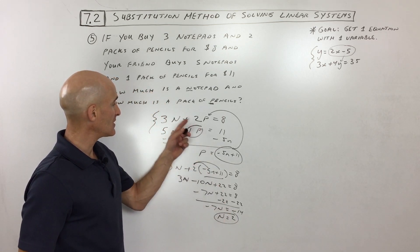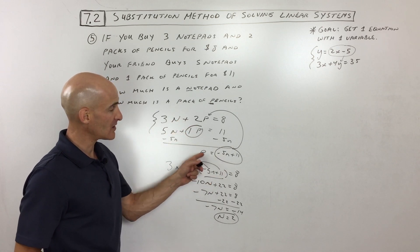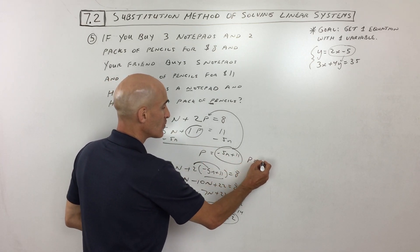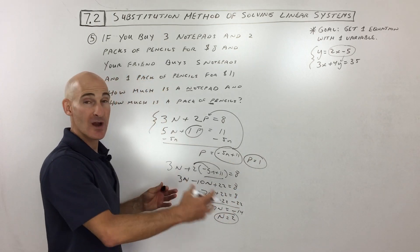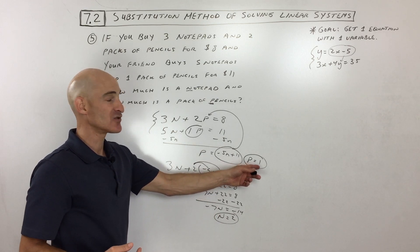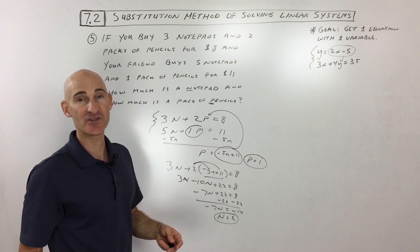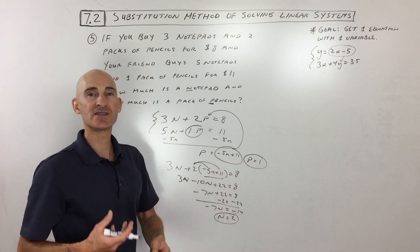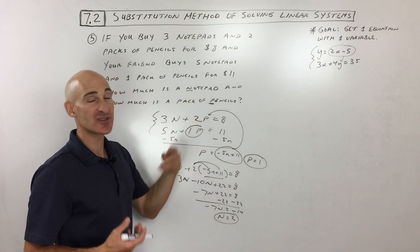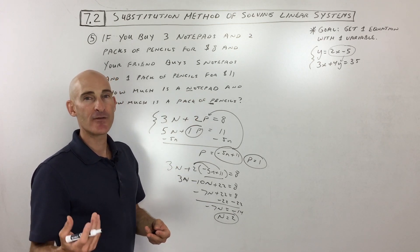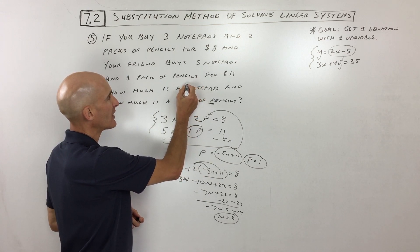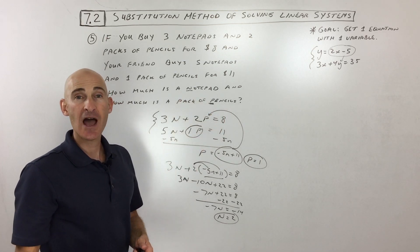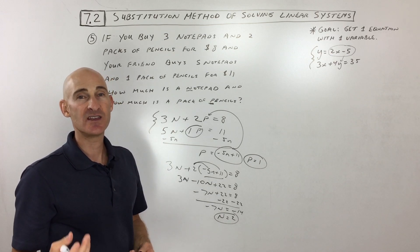Distribute the 2 — that gives us negative 10N plus 22. Bring down the 3N: negative 7N plus 22 equals 8. Subtract 22 from both sides: negative 7N equals negative 14. Divide by negative 7, and you can see a notepad is $2. If we put 2 back in: negative 5 times 2 is negative 10, plus 11 is 1. So P equals $1. Remember, it's a story problem, so write a sentence: a notepad costs $2, a pack of pencils costs $1. If you prefer X and Y, just write somewhere that X equals the price of a notepad and Y equals the price of a pack of pencils. We're going to move on to another technique for solving systems in 7.3.